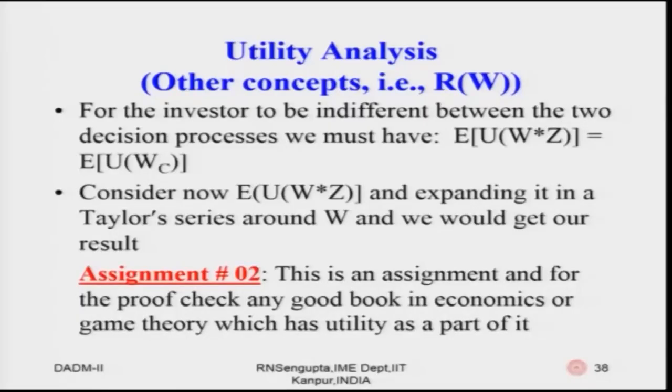This assignment word given is just for interested students — it carries no marks and has no implication for the course assignments or the final examination. Assignment one was given for A and assignment two is given for R — absolute risk and relative risk. These are just to inculcate inquisitiveness; anyone interested can check how these proofs are done.